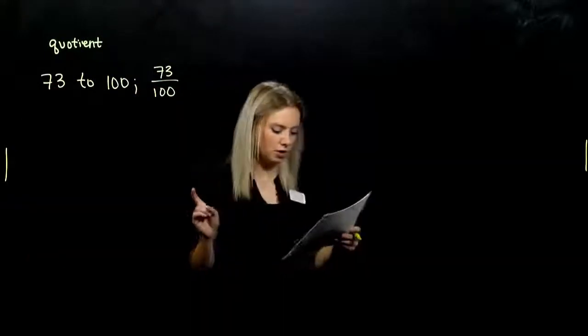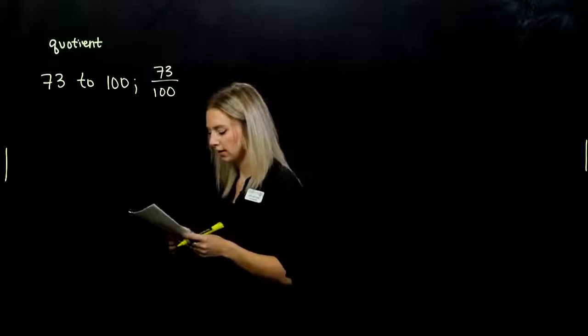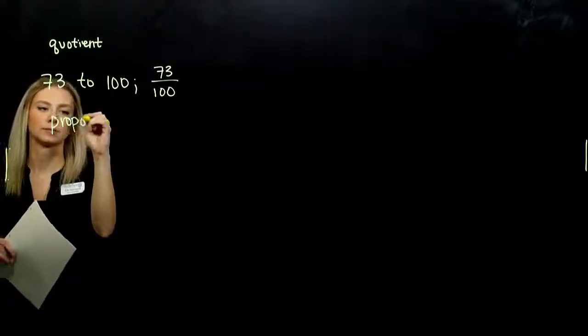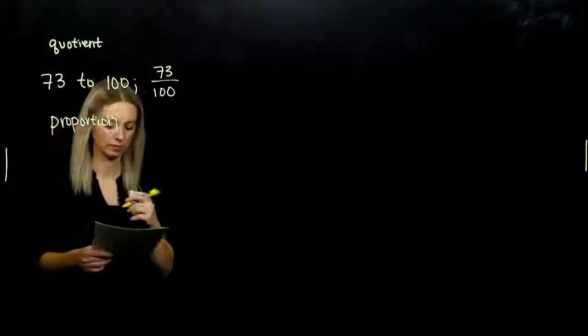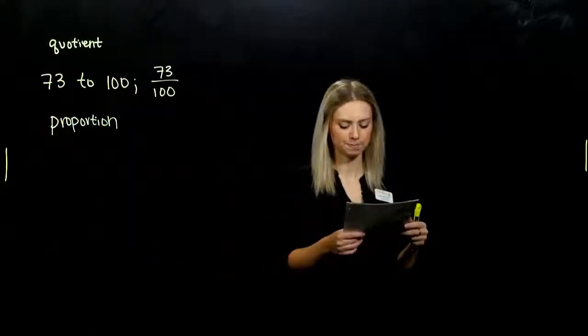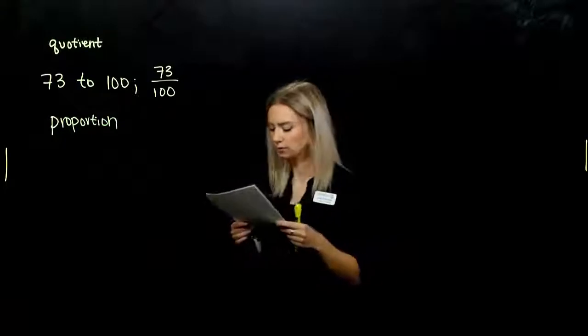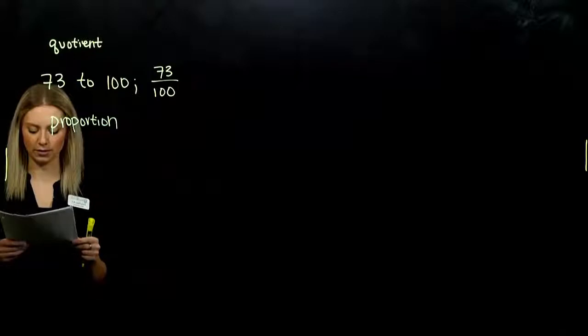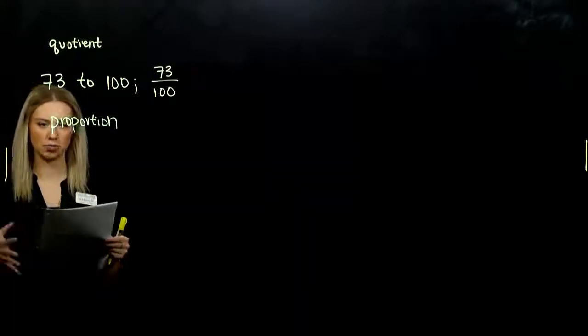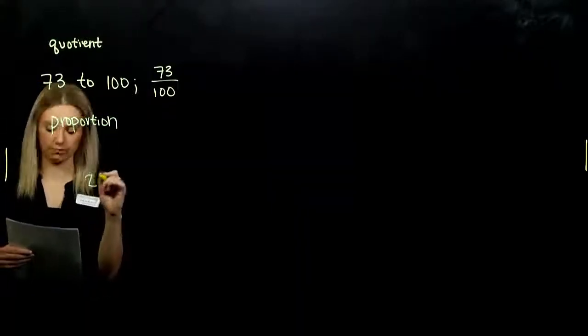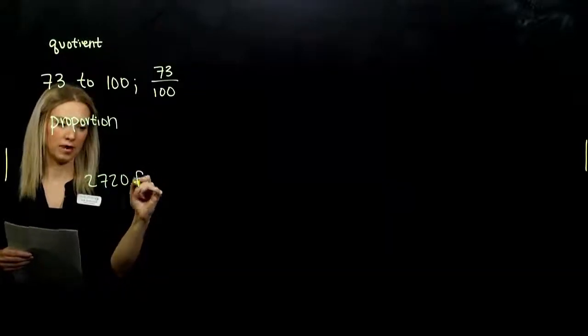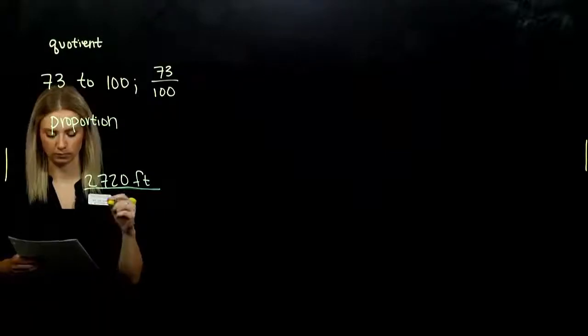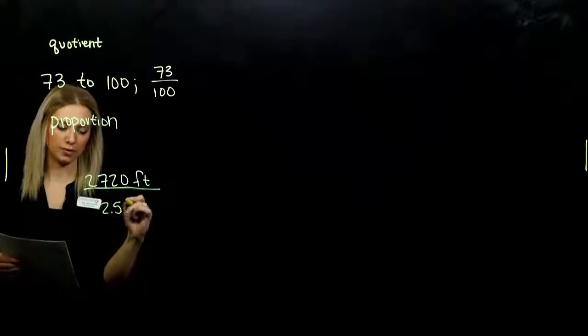The ratio of two different kinds of measure is called a proportion. So we're going to look at a few of those. Suppose an animal travels 2,720 feet in 2.5 hours. Its rate, or its speed, how can we represent it? How far is it traveling? This many feet. And over what time interval? With regard to time, 2.5 hours.